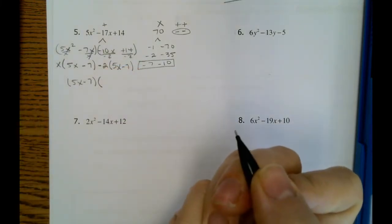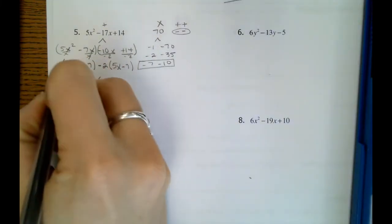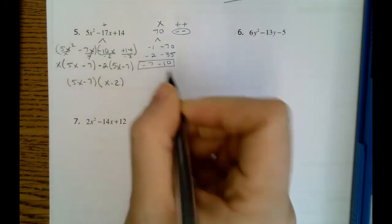So 5x minus 7 will be one of our answers. And then our GCFs will make up the second part of our answer, which is x minus 2.